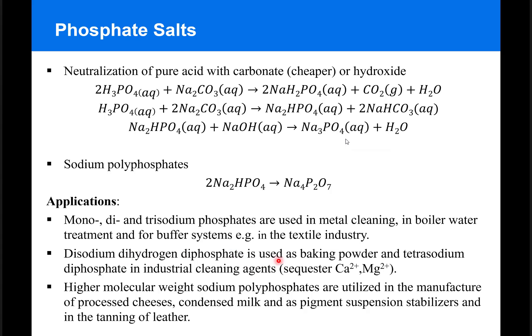Disodium dihydrogen phosphate is also used as baking powder, while the tetrasodium diphosphate is used as a filler in industrial cleaning agents to sequester calcium and magnesium ions.